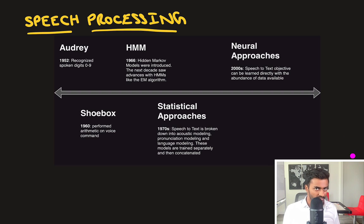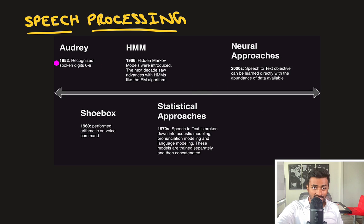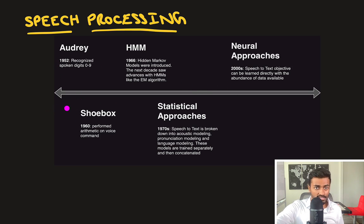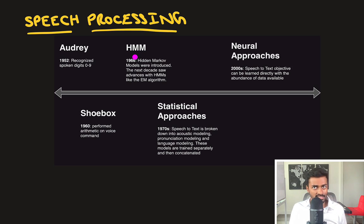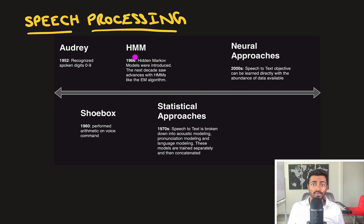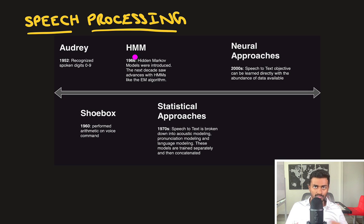Now let's look at speech processing. The earliest systems are also from the 1950s — Audrey, which could recognize digits spoken from 0 to 9, and also IBM's Shoebox, which could recognize digits from 0 to 9 and perform arithmetic via spoken commands. These were rule-based systems. Hidden Markov models were introduced in 1966, with many other advances following within a few years. By the 1970s, we could use more statistical approaches to speech processing.